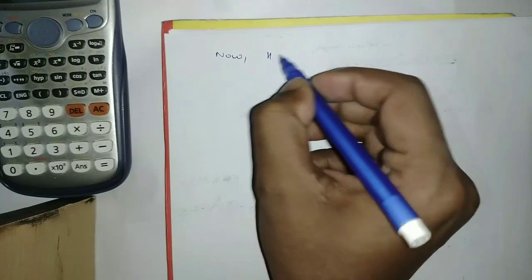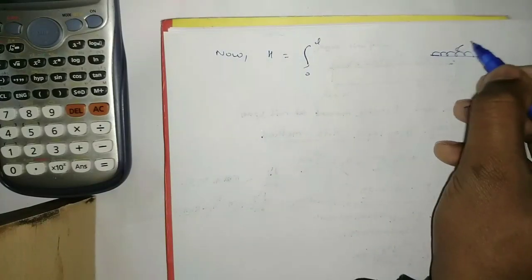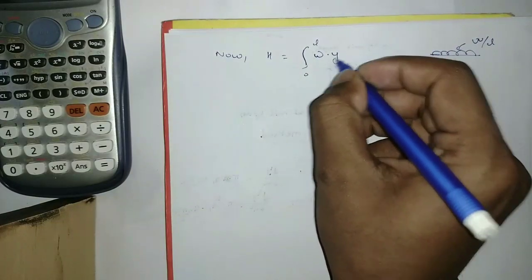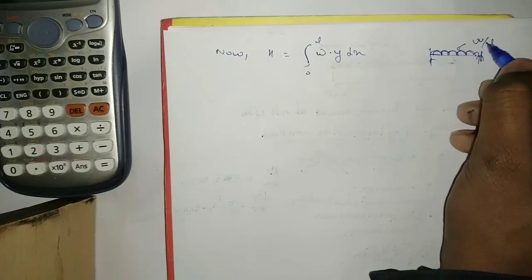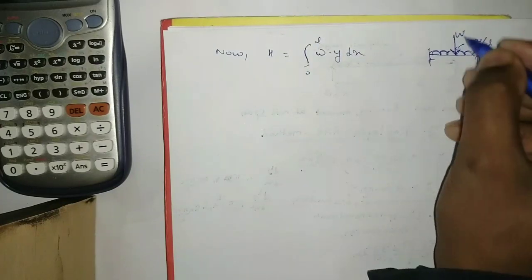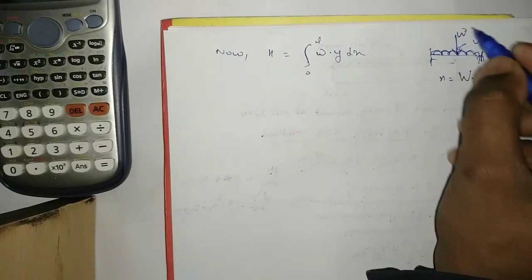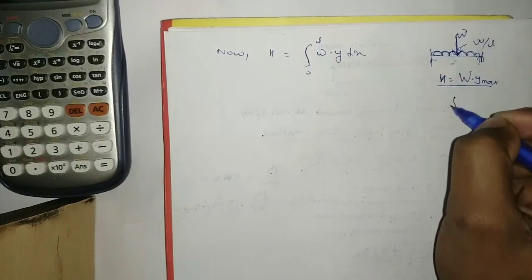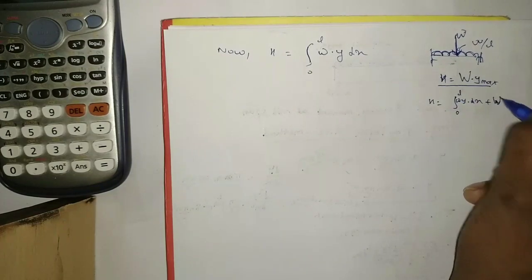Now we calculate the external work. The external work integral is: H = ∫₀ᴸ W·y dx, because this beam carries a UDL of W per unit length. Substituting the trial function y = a1·sin(πx/L), we get: H = W·a1·∫₀ᴸ sin(πx/L) dx. For a point load case, we instead take W·y_max.